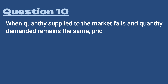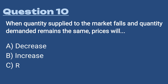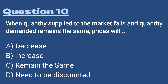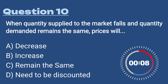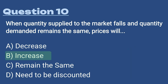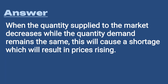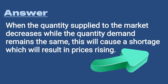Our last question, number ten: when quantity supplied to the market falls and quantity demanded remains the same, prices will A) decrease, B) increase, C) remain the same, or D) need to be discounted. The answer is B, increase. When quantity supplied decreases while quantity demanded remains the same, this causes a shortage — you have the same number of people wanting the same amount of goods but less supply, so prices will rise.